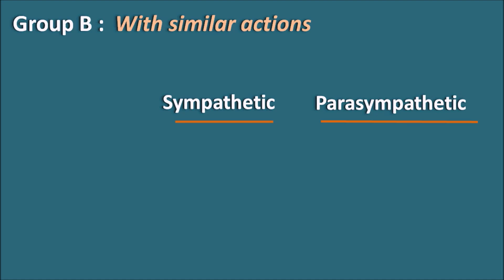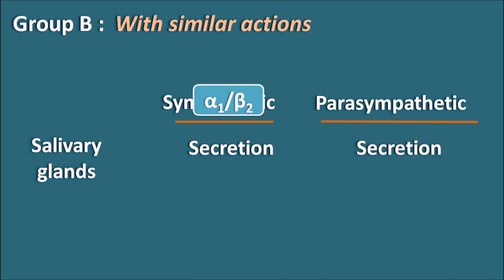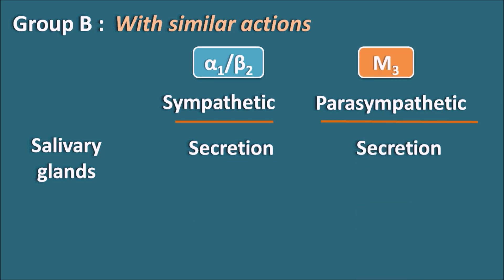Now let us see Group B, where both innervations are present with similar actions. The only target here is the salivary glands. At the salivary glands, both the sympathetic system as well as the parasympathetic system produce secretion. The sympathetic system can work through alpha 1 or beta 2 receptors, whereas the parasympathetic system works through M3 receptors. The salivary glands are the only target in Group B where these two divisions work in a similar way.